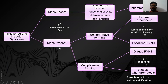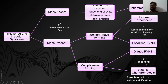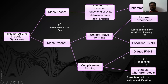The algorithm is based on thickened and irregular synovium with mass present or absent. When masses are absent with periarticular erosions, sub-chondral edema, and joint effusions, suspect inflammatory or infective pathologies. When masses are present: solitary mass forming includes lipoma arborescens and localized PVNS — lipoma arborescens has no loose bodies or blooming, whereas localized PVNS shows bone erosions and blooming. Multiple mass forming includes diffuse PVNS with blooming, while synovial chondromatosis shows no blooming but is associated with calcifications.